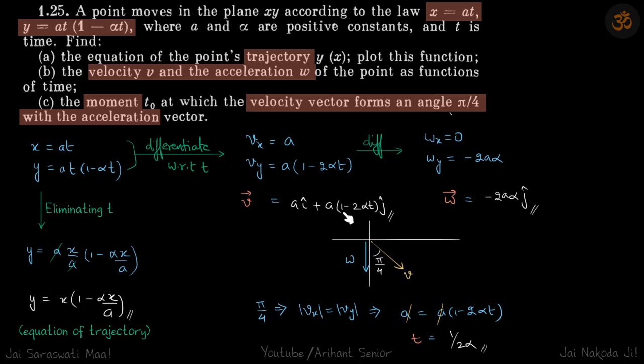So a is equal to a of 1 minus 2αt which happens at t is equal to 1 by 2α.